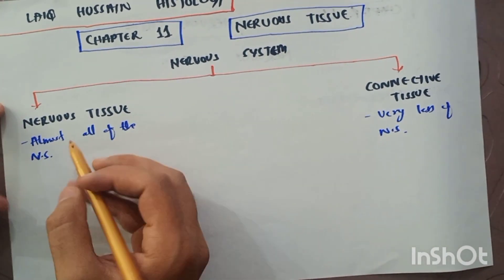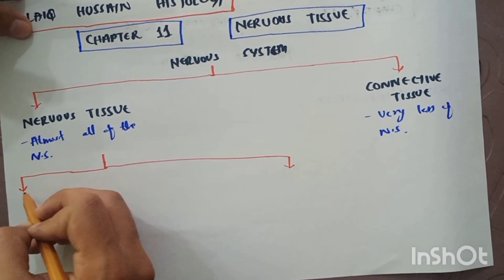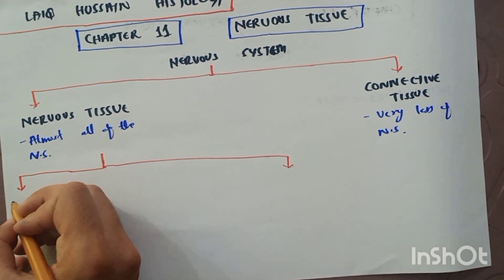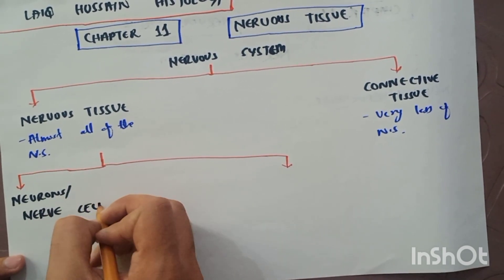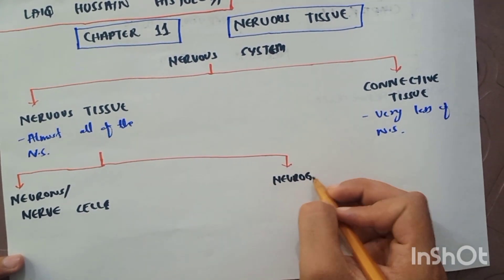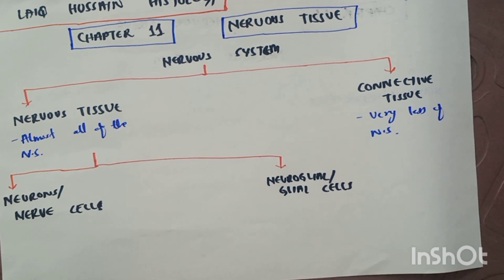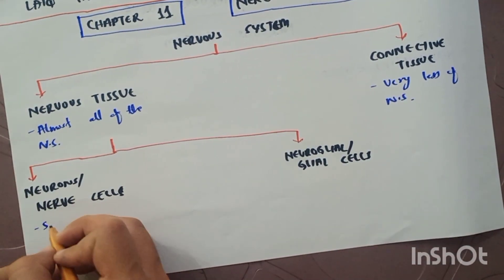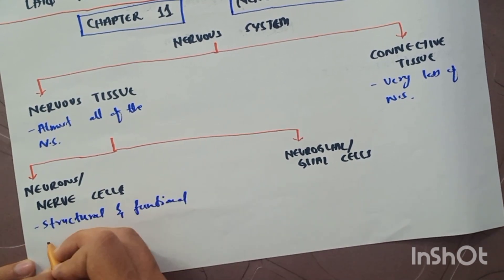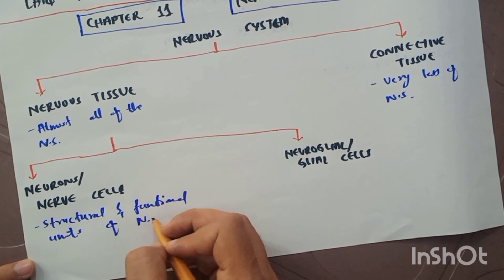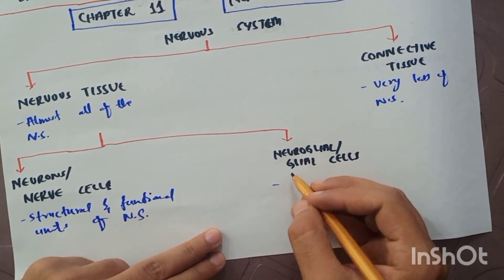The nervous tissue of the human body is mainly made up of two types of cells. Number one is the neurons or nerve cells, and number two is the neuro glial or glial cells. The neurons or nerve cells are the structural and functional units of the nervous system, but the neuro glial or glial cells are the supporting cells of the nervous system.